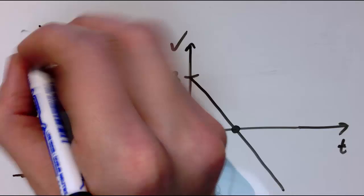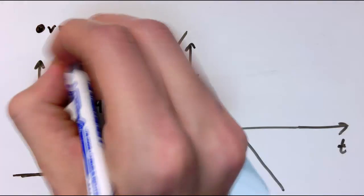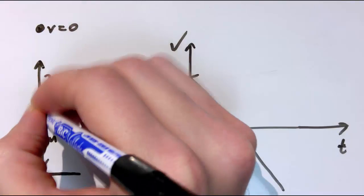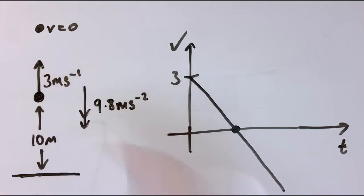Where it'll just be instantaneously at rest somewhere, maybe it'll get to here, and it'll have a point when V equals zero. And then it will start coming back down again, so there'll be another point on its way down where it's in the same place, but it's going downwards, and at that point V will be negative.